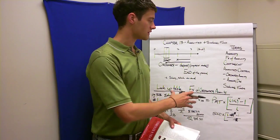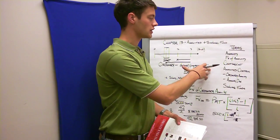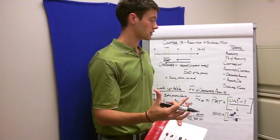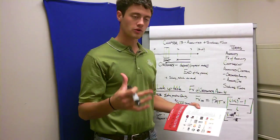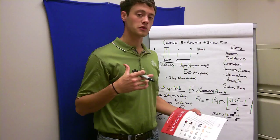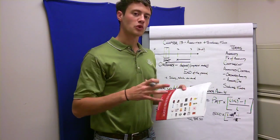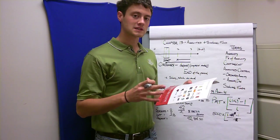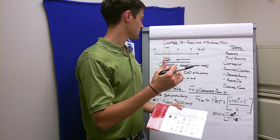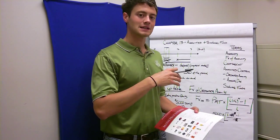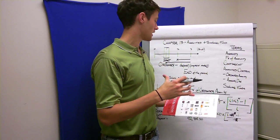Some terms that you need to know are: annuity, future value of annuity, present value of annuity, your annuity assertant — which are your ordinary and your annuity due — as well as sinking funds. What is an annuity? It's a frequent payment or deposit to get a series of payments back or deposits back.